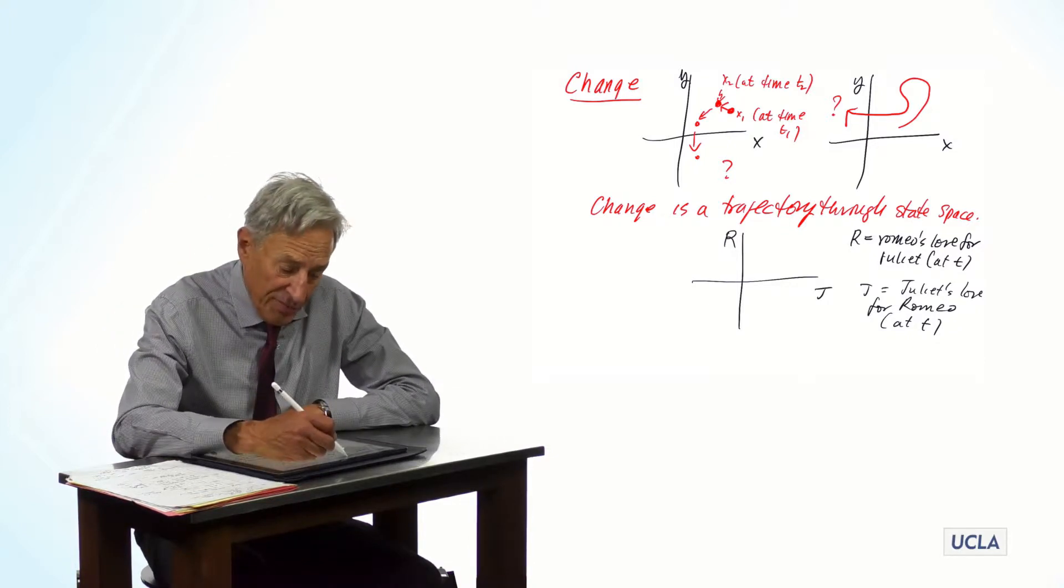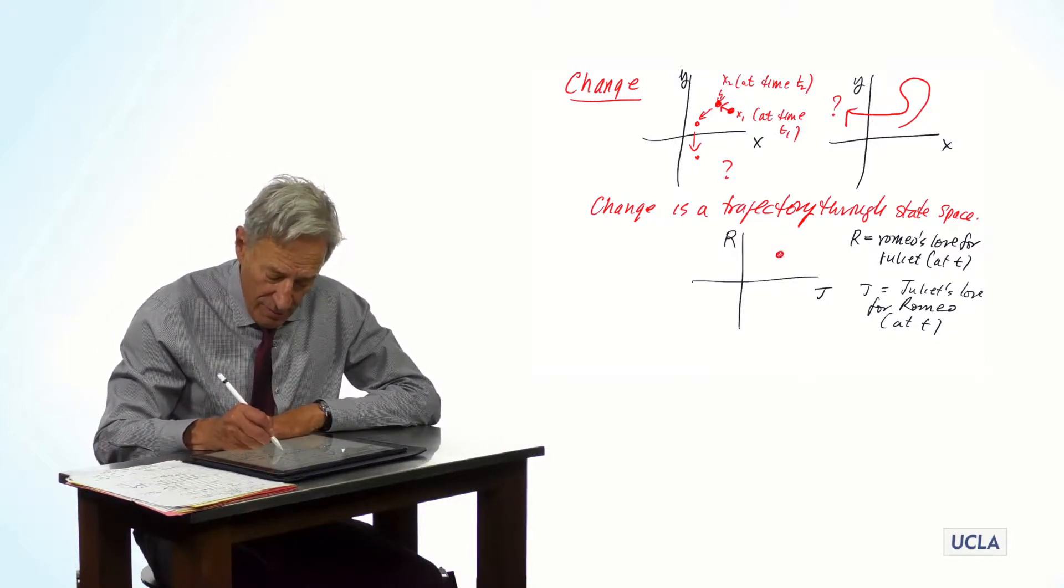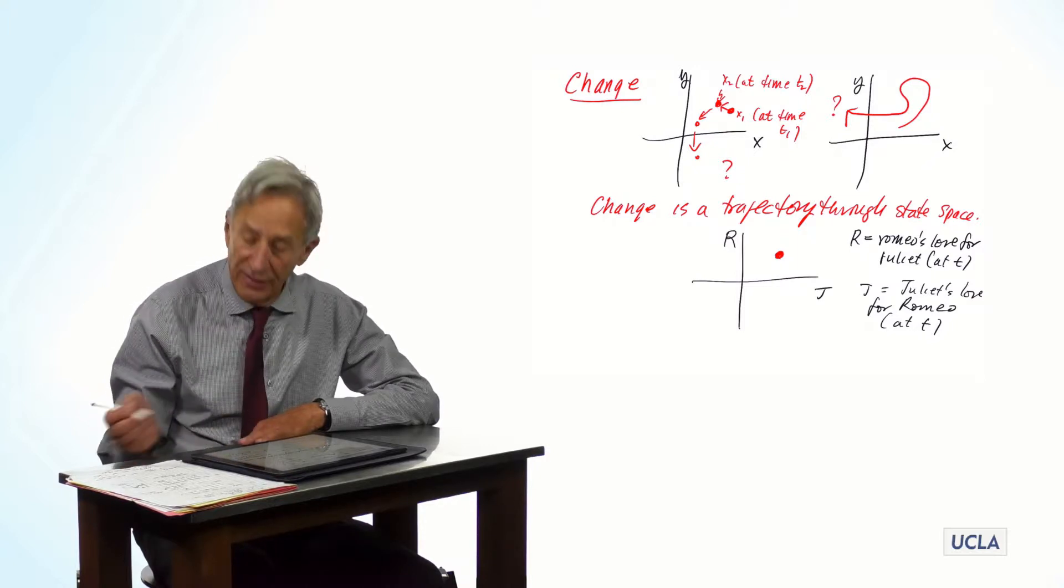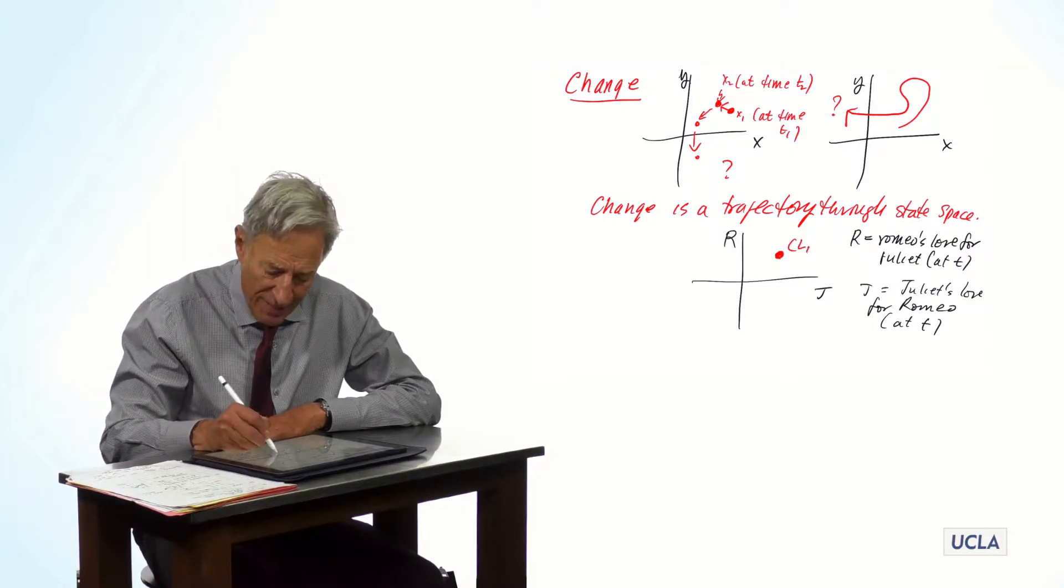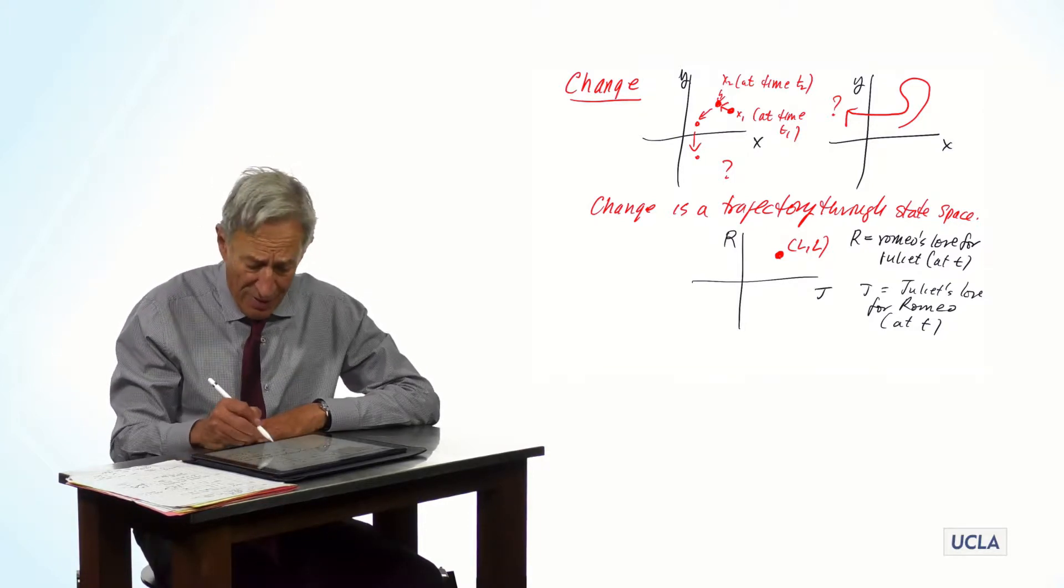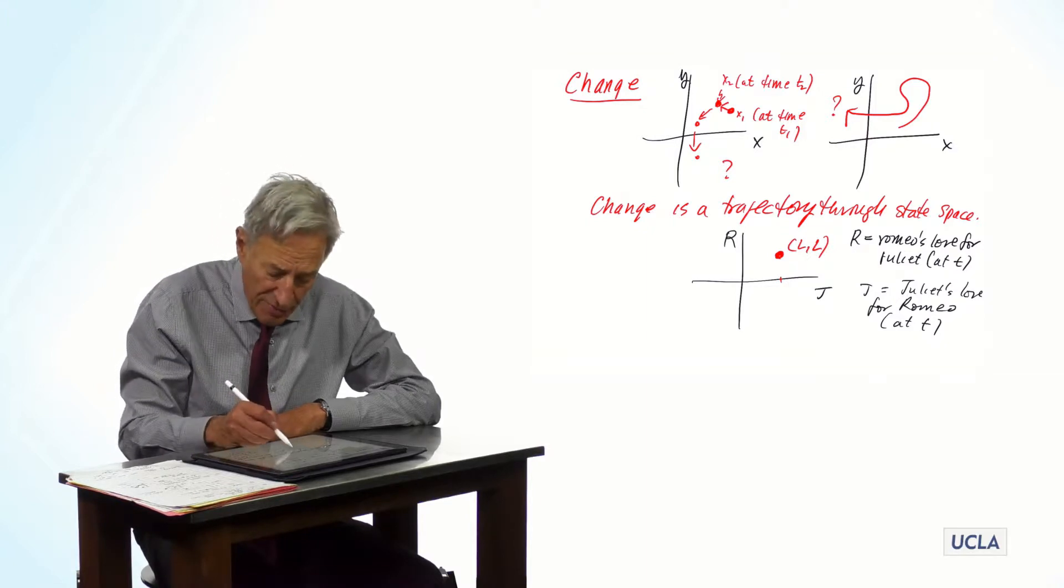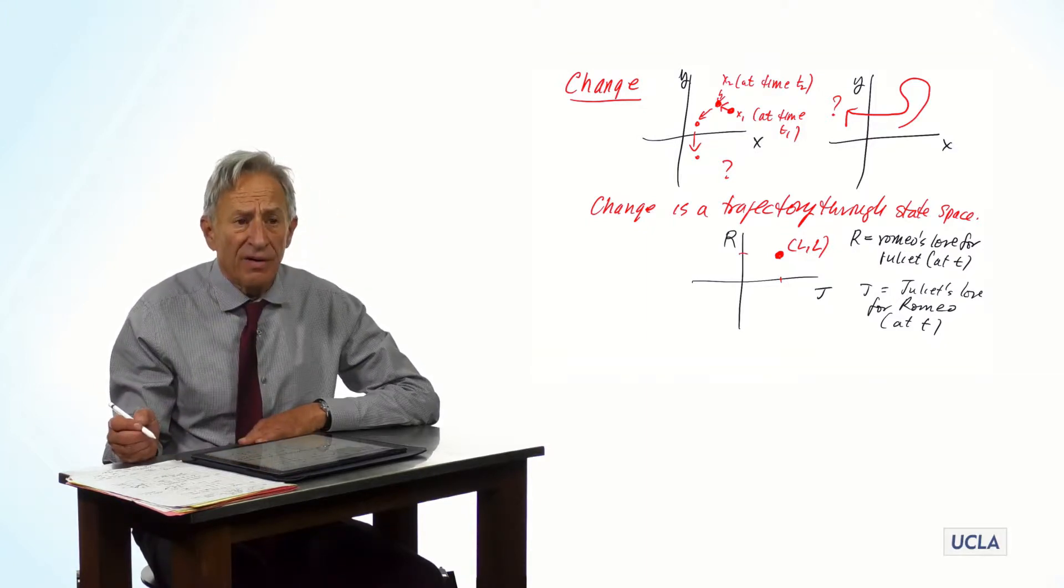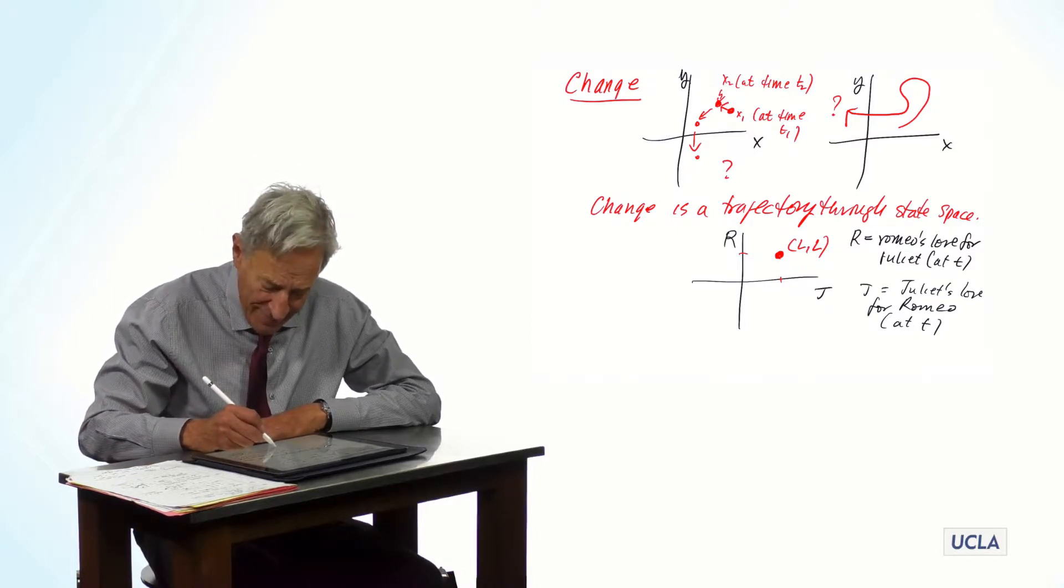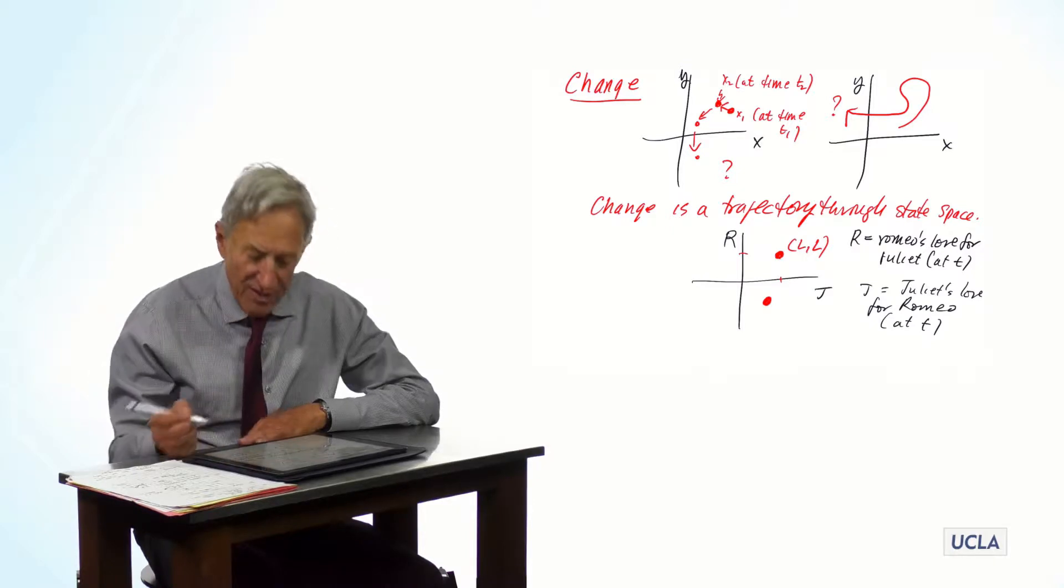And let's suppose that at one point, this couple was at this point. So remember, in the Romeo and Juliet example, positive values denote love, negative values denote hate. So we can label this point. We know what this is. This is a point LL. Juliet loves Romeo because the j value is positive, and Romeo loves Juliet because the r value is positive. Now, over time, things happen, as you know.